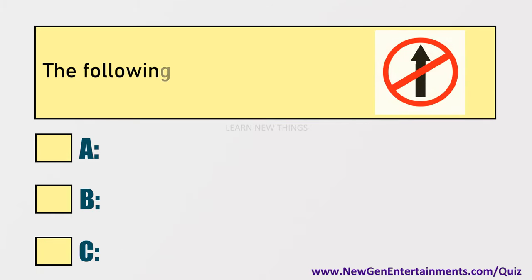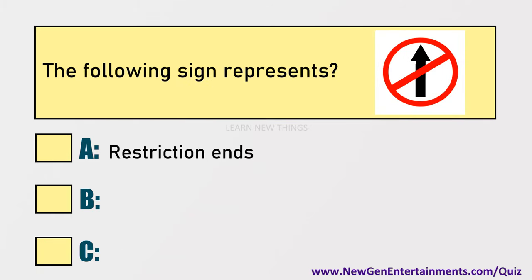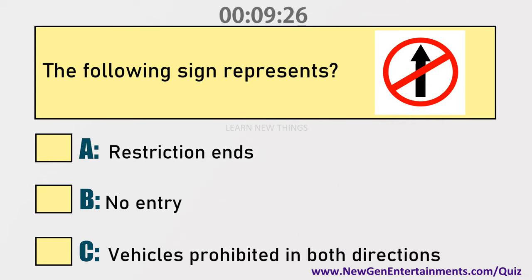The following sign represents: Options are: A) Restriction ends, B) No entry, C) Vehicles prohibited in both directions. Answer: Option B, No entry.